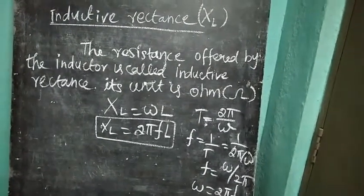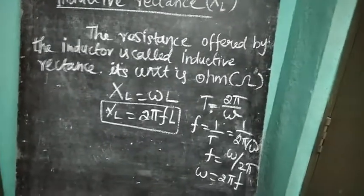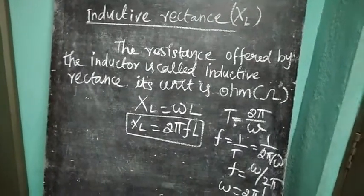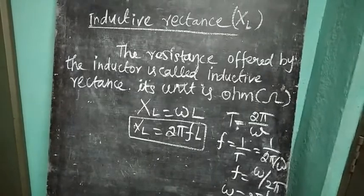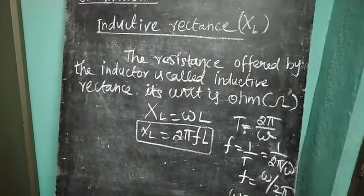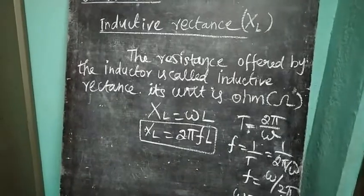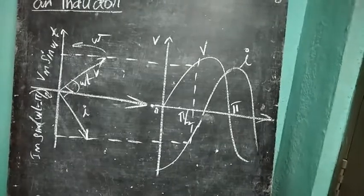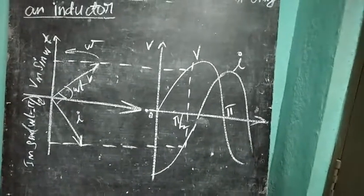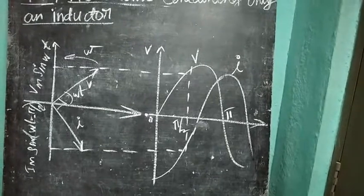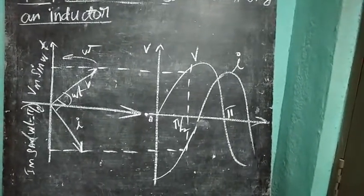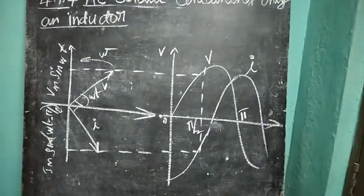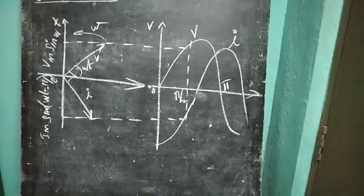For inductive reactance, it is directly proportional to frequency. For steady current, F equals 0, therefore XL equals 0. Thus, an ideal inductor offers no resistance to steady DC current. This diagram indicates the voltage phase diagram and waveform of alternating current. From this diagram, the current I lags behind the voltage by phase angle pi by 2.